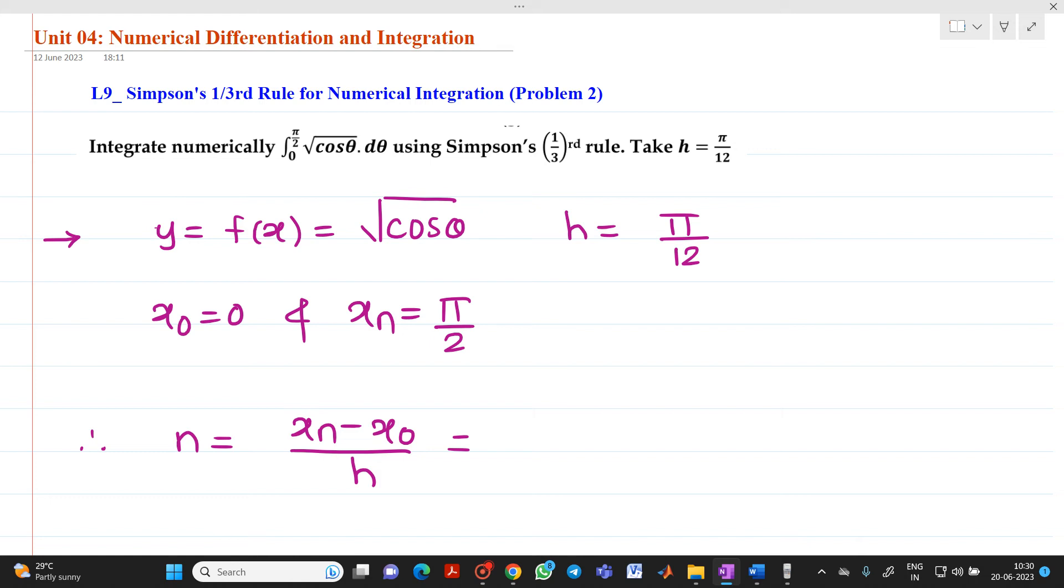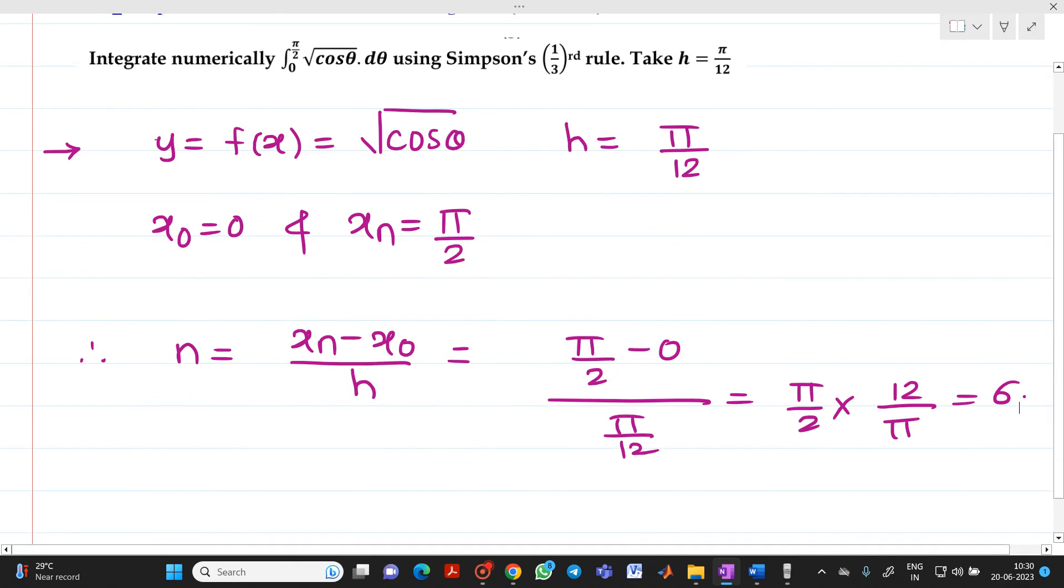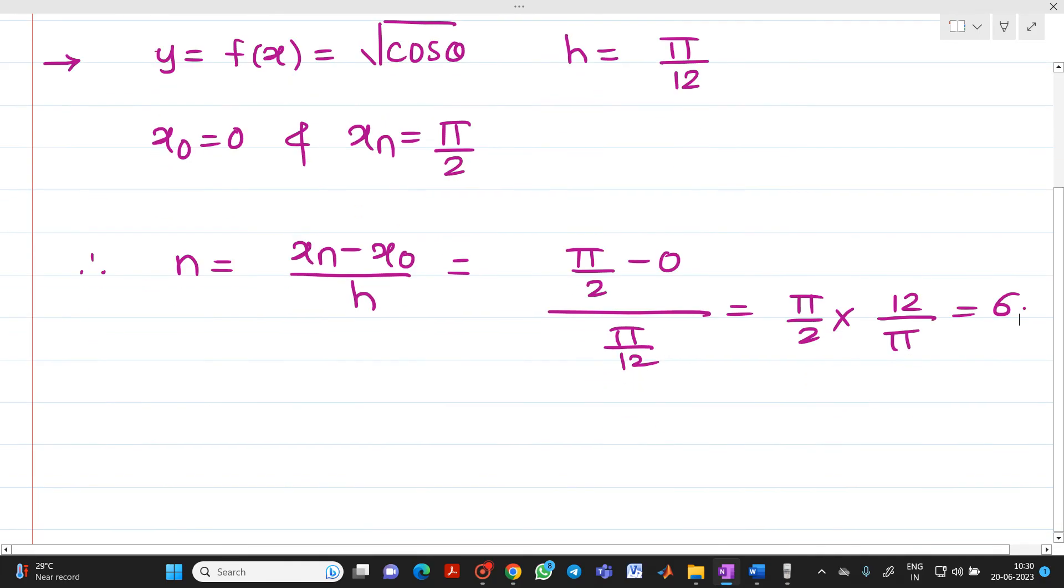xₙ is nothing but your π/2 minus 0 divided by π/12. That means you will write it as π/2 times 12 upon π, so you will get here n will be equal to 6. That is, we will have entries from 0 to 6.